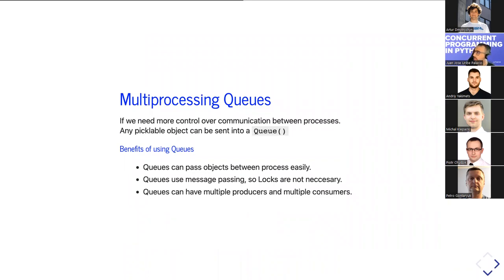Sometimes we don't just need a mapping function — we need processes interacting with different independent tasks. For that, we have queues. Queues are a space of shared memory in the operating system. Communication between processes can use pipes — duplex communication between only two processes, limited to one producer and one consumer — or queues, which support multiple producers and multiple consumers. Think of queues as a message-passing system.